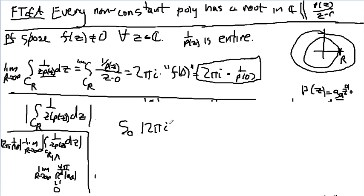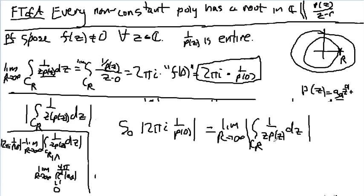So, 2 pi i times 1 over p of 0 is equal to the limit as r goes to infinity of this integral, dz, and we'll take the modulus of the integral, which we showed equals 0.